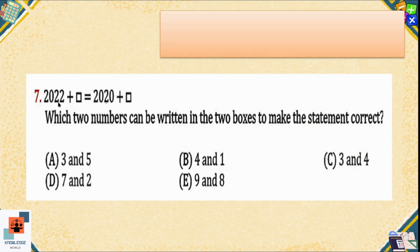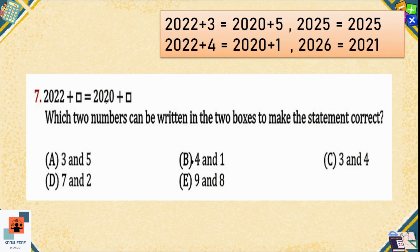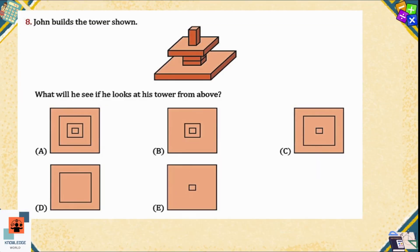Question number seven: 2022 plus blank equals 2020 plus blank. Which two numbers can be written in the two boxes to make the statement correct? We check all options. If we put 3 with 2022 and 5 with 2020, then 2022 + 3 = 2025 and 2020 + 5 = 2025 — both are the same, so that works. If we try option B and put 4 with 2022 and 1 with 2020, then 2026 does not equal 2021 — incorrect. Option A is the correct option.